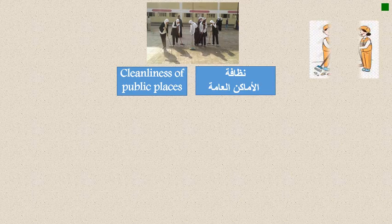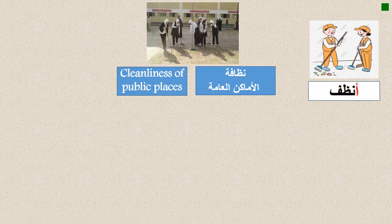In the first picture you can see a boy and a girl — they are cleaning. So what is the meaning of 'clean' in Arabic? It is أنظف. Repeat after me: أنظف. This is a verb, guys. If you talk about a boy, you will say يُنظِّف, starting with 'ya'.